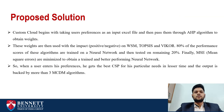The proposed solution: Custom Cloud begins with taking user preferences as an input Excel file and then passes them through the AHP algorithm to obtain the weights. These weights are then used with the impact — which can be either positive or negative — on WSM, TOPSIS, and WICON. 80% of the performance scores of these algorithms are trained on a neural network and then tested on the remaining 20%. Finally, the mean square errors (MSE) are minimized to obtain a trained and better performing neural network. When a user enters his preferences, he gets the best CSP for his particular needs in less time, backed by more than three MCDM algorithms.